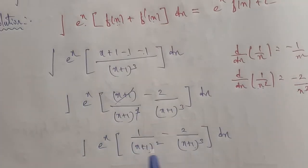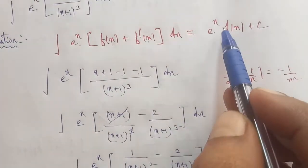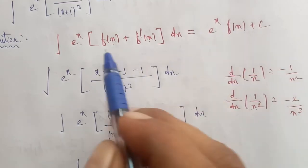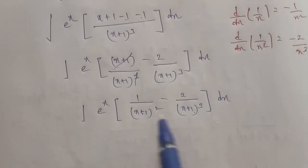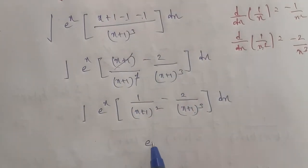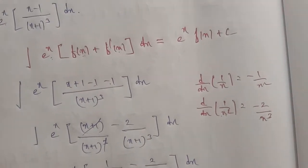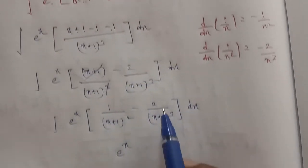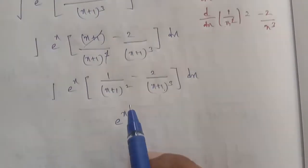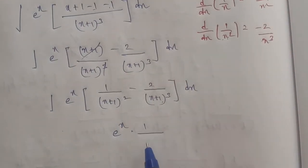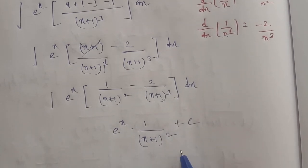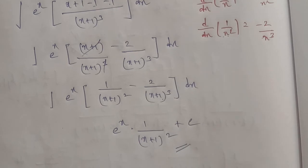So we can now use the formula: e power of x, with f of x equal to 1 by x plus 1 the whole power of square, plus C. That is our final answer. Thank you.